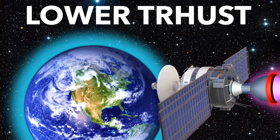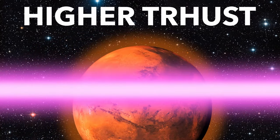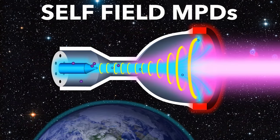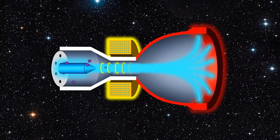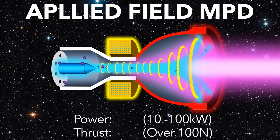But self-field MPDs are only really good for low thrust applications. For traveling to Mars, we need much higher thrust and more power. But for self-field MPDs, increasing the power creates plasma instabilities. The solution is the applied field MPD, which uses more power but also produces more thrust.